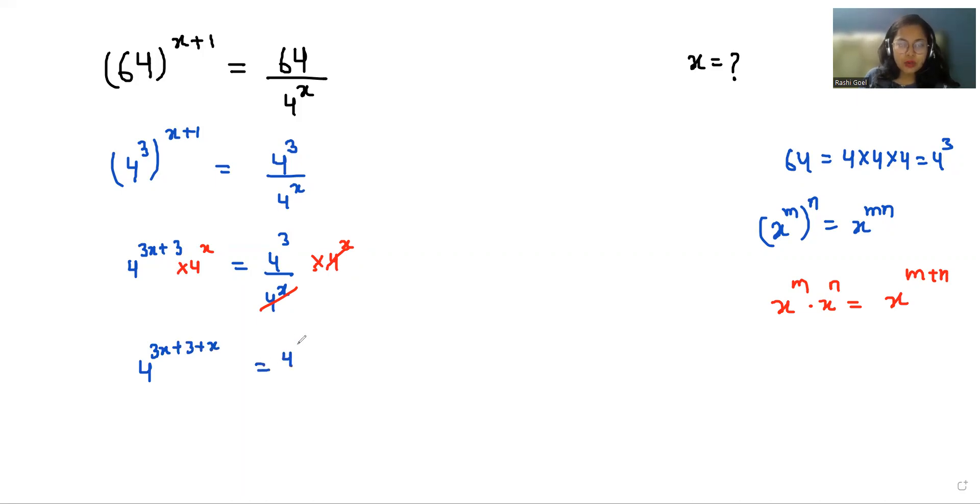4^(4x+3) equals 4^3. We know that if the bases are equal, their powers are also equal, so we simply write 4x+3 equals 3. Therefore 4x equals 3 minus 3, 4x equals 0, so x equals 0. The value of x is 0.